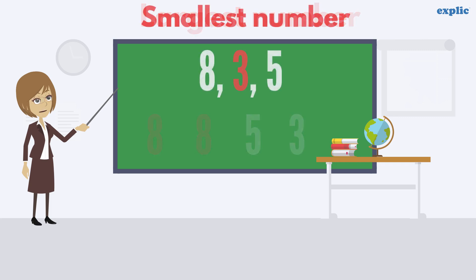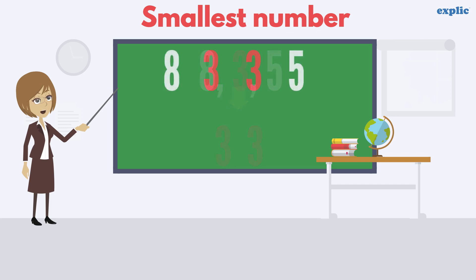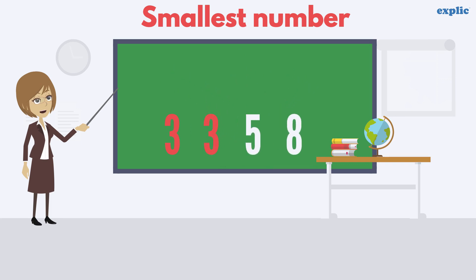To form the smallest four-digit number, just repeat the smallest digit twice. Since 3 is the smallest digit, use 3 two times. Arrange digits in ascending order to get the smallest four-digit number. 3358 is the smallest four-digit number using 8, 3 and 5.